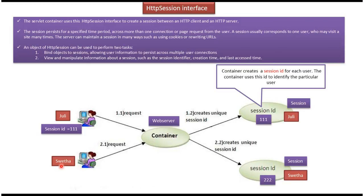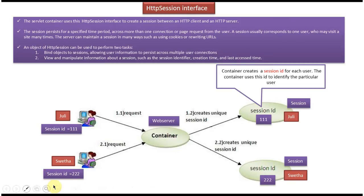Here you can see Svaita. Svaita sends a request to the container, so the container will create a session for Svaita. The session ID will be unique for Svaita — in this case, session ID 222. That session ID will be sent back to Svaita, and for the second and third requests, this session ID will be part of the request.